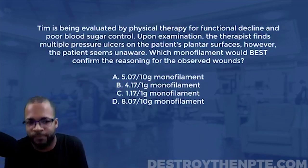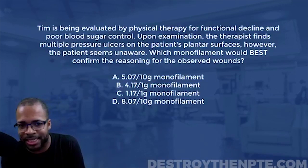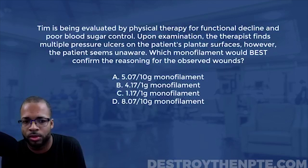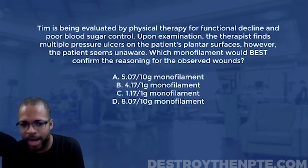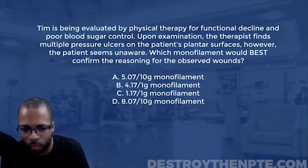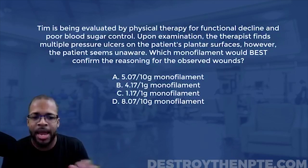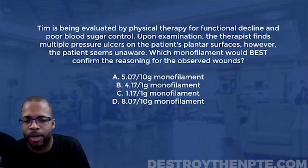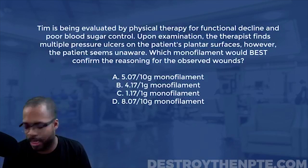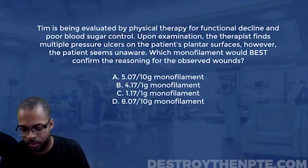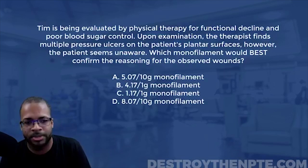Which monofilament would best confirm the reasoning for the observed wounds? The options are: A) 5.07 / 10-gram monofilament, B) 4.17 / 1-gram, C) 1.17 / 1-gram, and D) 8.07 / 10-gram.